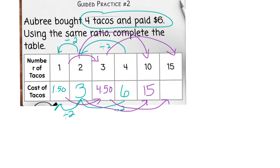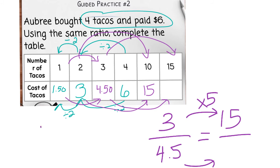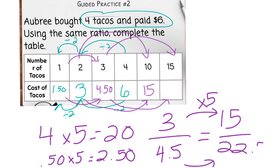So we could say three tacos is $4.50. To get to 15, this is times five. So I would need to do this times five. So if you break that apart, four times five is 20. And then the 50 cents times five. Think of 50 cents plus 50 cents is $1 plus another 50 cents is $1.50. Another 50 cents is $2.00. And one more 50 cents is $2.50. So that would be a total of $22.50 for 15.